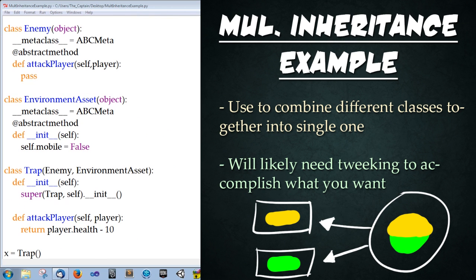So why use multiple inheritance? Well, as you can see, sometimes there may be instances where you want to combine different attributes of single classes together. Rather than creating a new class from scratch, you can just inherit from both. But be warned — this can break the class and will most likely need tweaking to accomplish what you want.